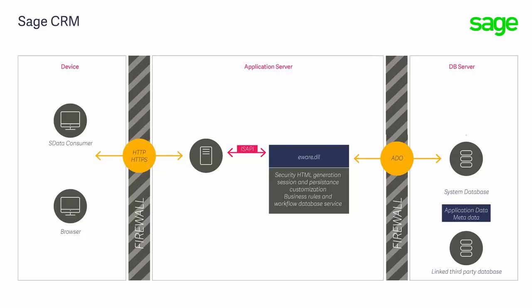It returns the HTML that builds the screens that the user sees, and the eWare DLL interacts with its database through ADO — that's ActiveX Data Objects. The database holds the metadata that describes how the screen should be built, and the application data is the business information which is the focus for the system users. It should be pointed out that the key aspect for system performance is the database.